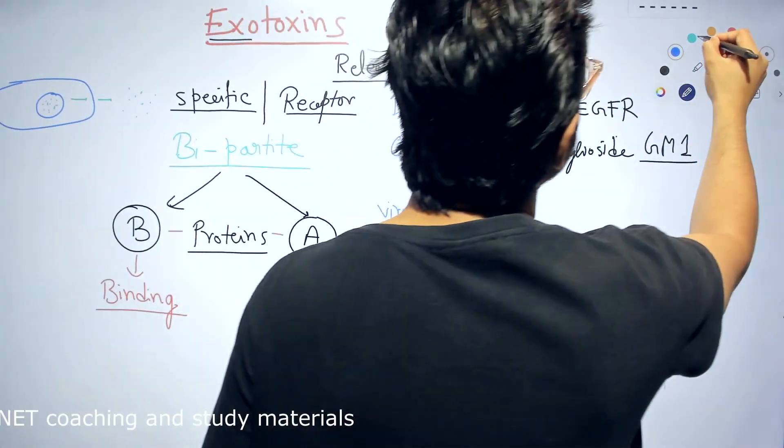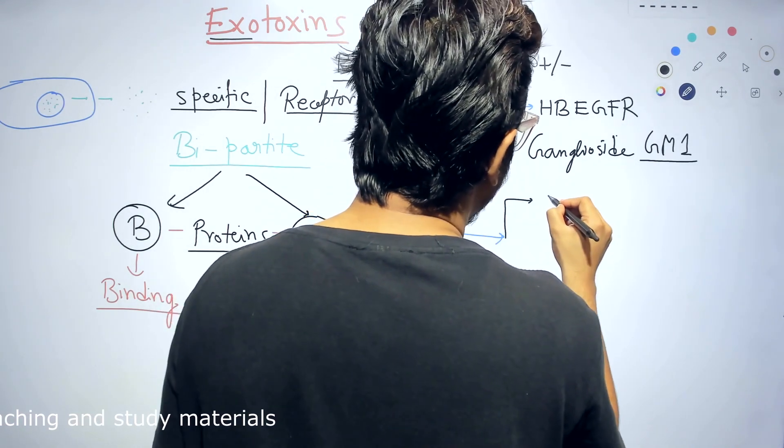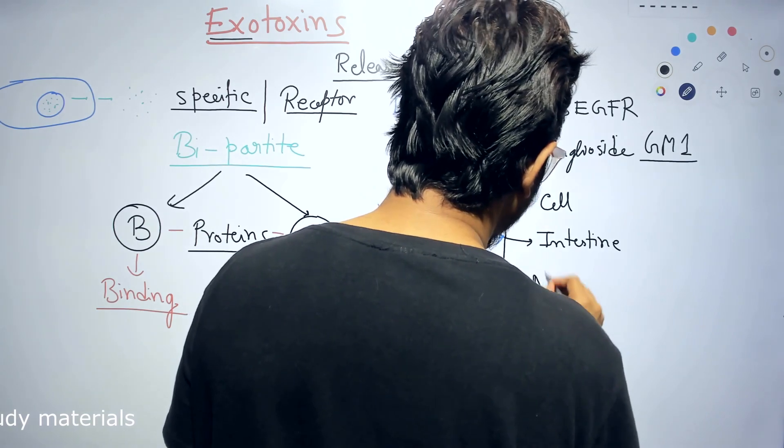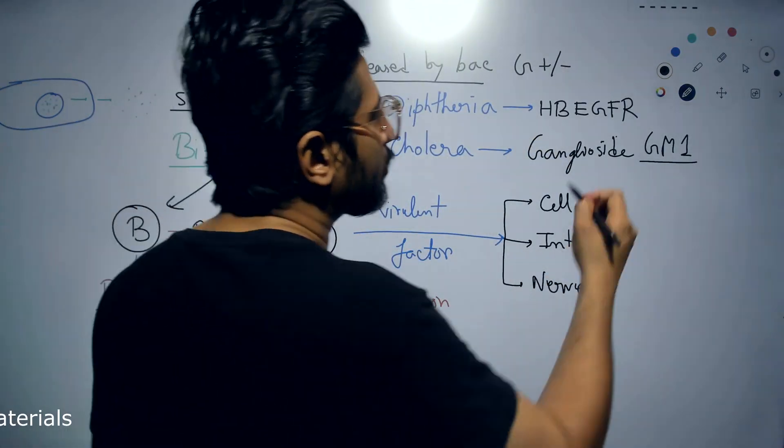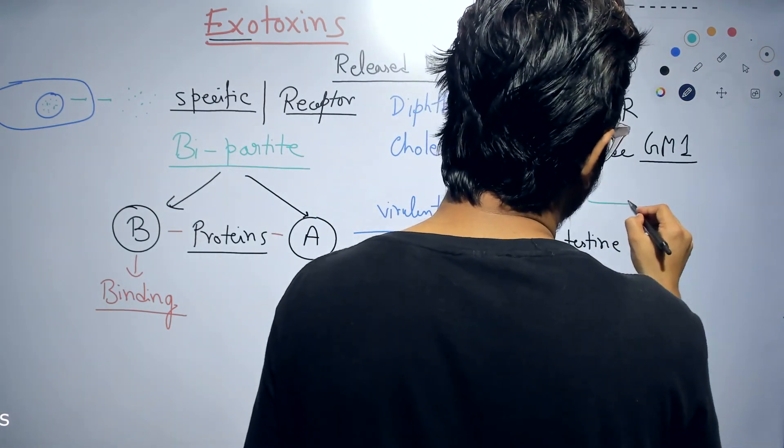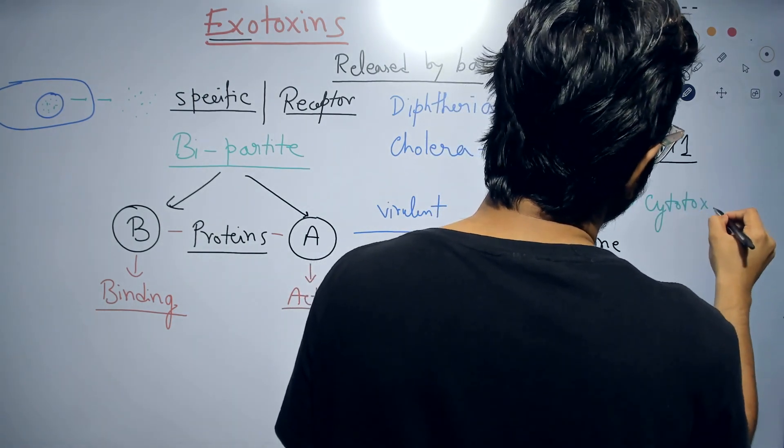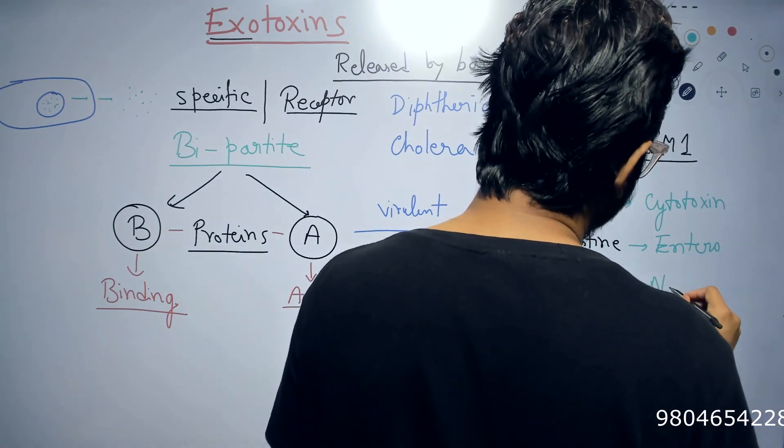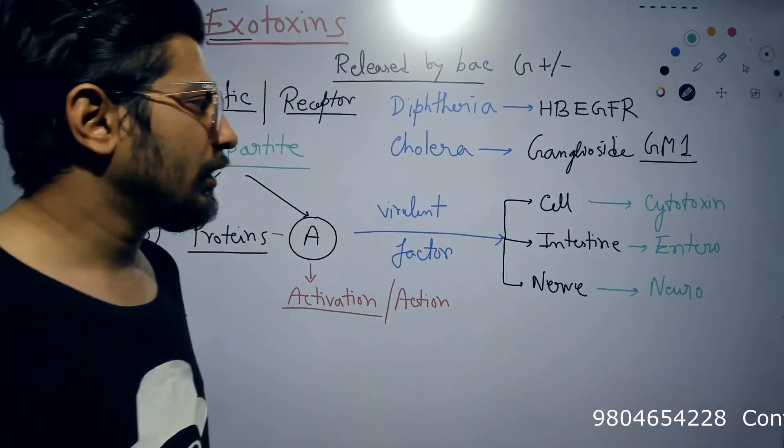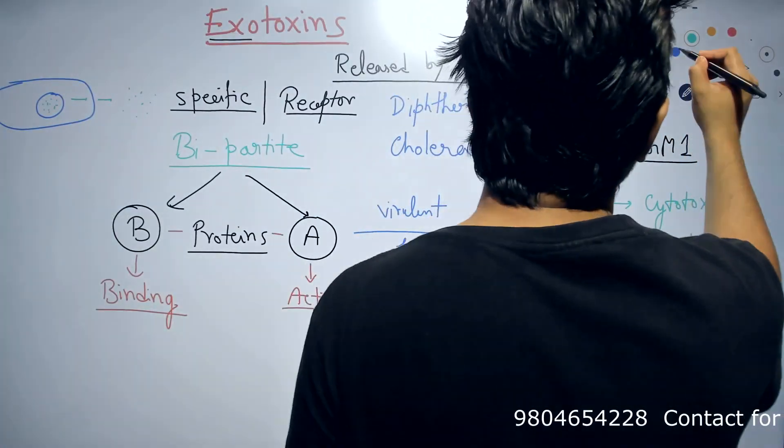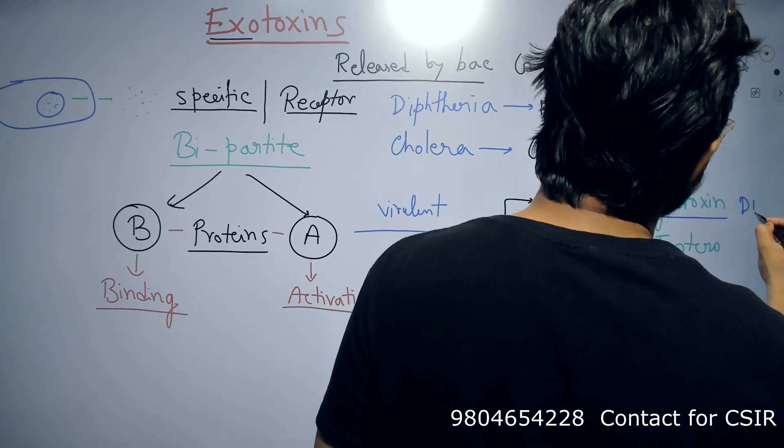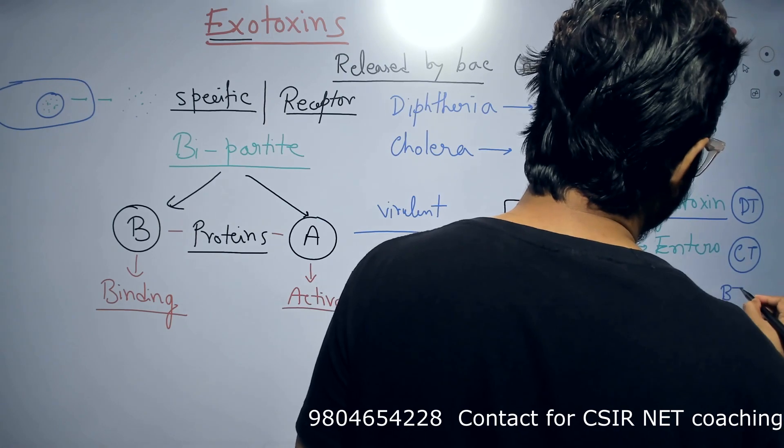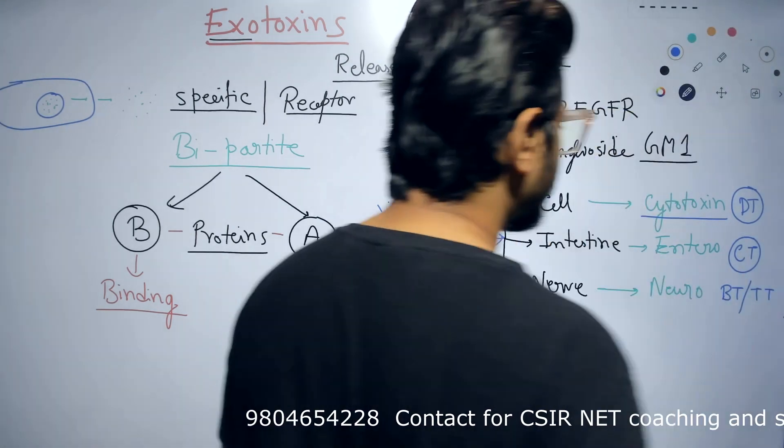So this A, they have different targets for damage. Different sorts of targets they can choose. So they can choose particular cells for damage or they can choose intestinal cells for damage or they can choose nerve cells for damage. And if their target is nerve cells, we call them neurotoxin. Cytotoxin, enterotoxin, neurotoxin. And I will give you an example of each kind. Cytotoxin example: diphtheria toxin. Enterotoxin example is cholera toxin. Neurotoxin examples are botulinum toxin as well as tetanus toxin.